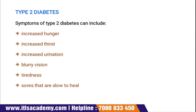Moving to Type 2 diabetes, symptoms can include increased hunger, increased thirst, increased urination, blurry vision, tiredness, and sores that are slow to heal. These symptoms are also common across all types of diabetes.